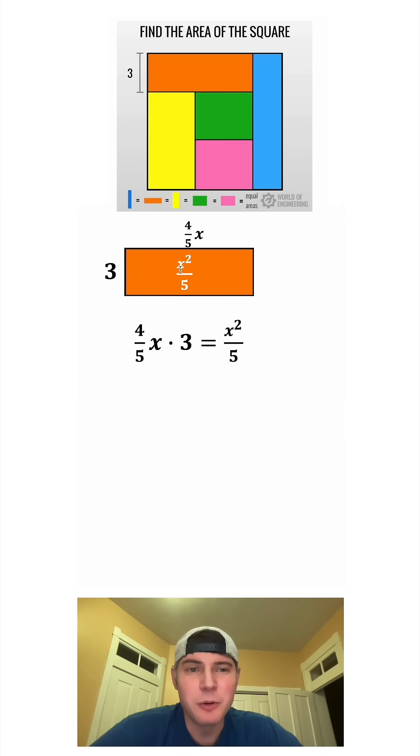And then once again, base times height will equal the area. So we know that the base of four-fifths x times the height of 3 will equal the area of x squared over 5. So on the left-hand side, let's write this as a single fraction. On top, we can do 4 times x times 3, which gives us 12x. And on bottom, we just have the 5. And this is still equal to x squared over 5.